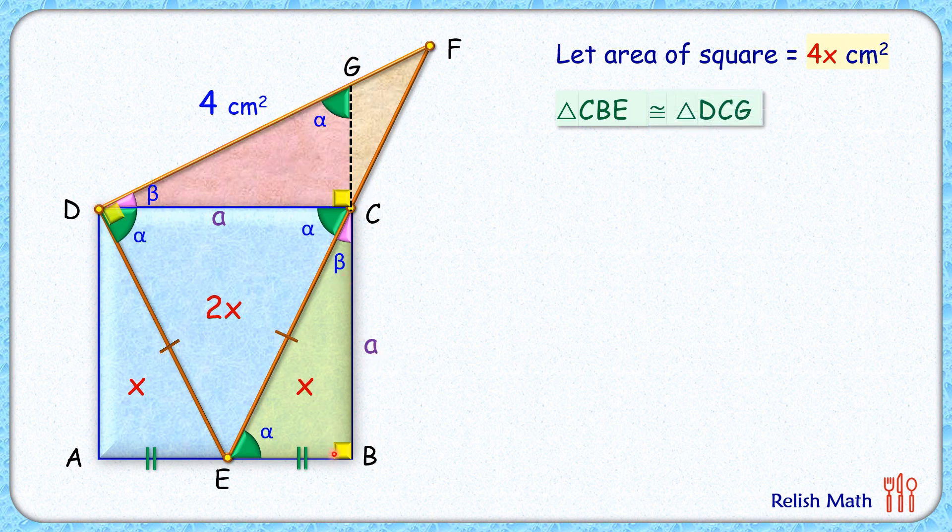As the triangles are congruent, their areas will be equal. So the area of triangle DCG is x centimeter square. Also, the length of corresponding sides will be equal. E is the midpoint, so EB is a by 2.